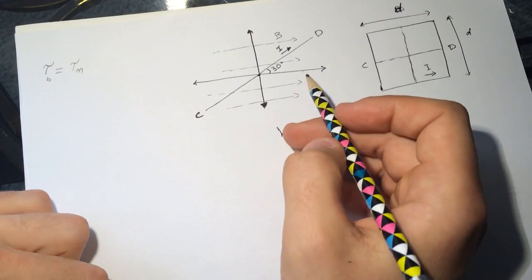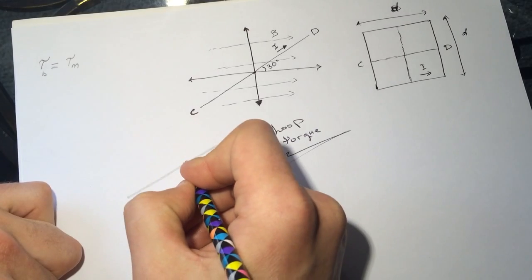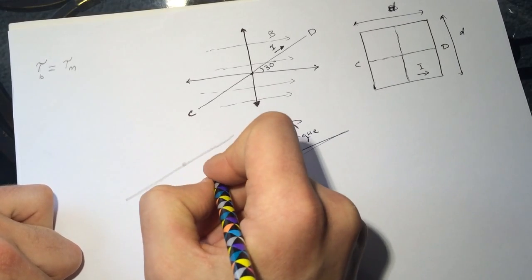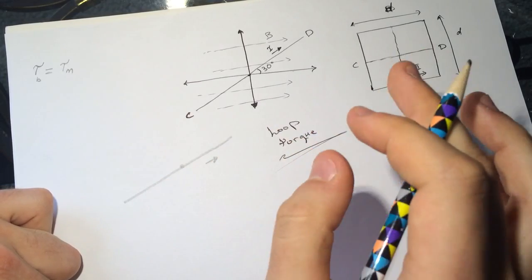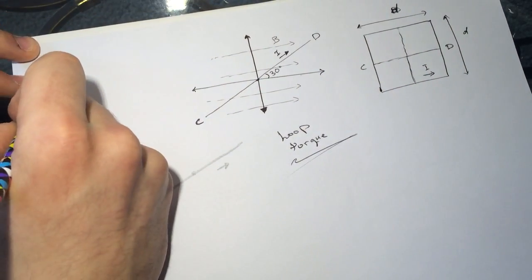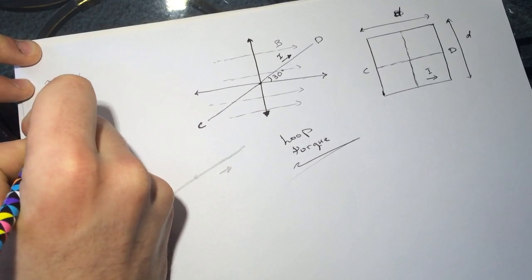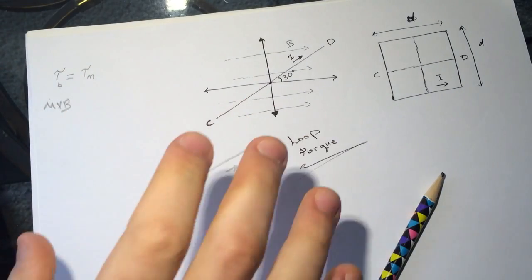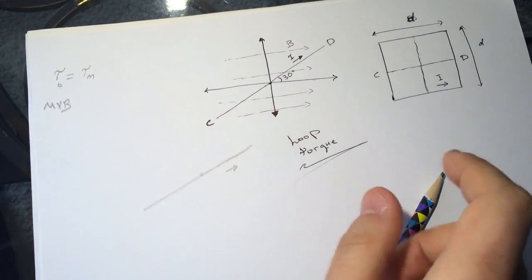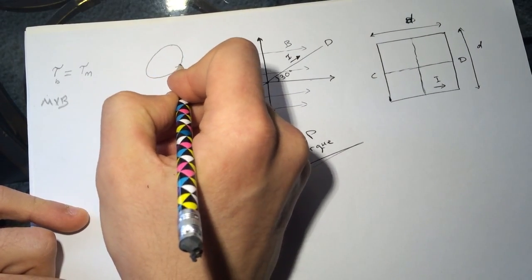So if the current is going this way, then the magnetic dipole, which creates the torque from the magnetic field, is μ cross B. The dipole moment - you cross your fingers with the current around it. Curl your fingers with the direction of the current and this will give you the direction of the dipole moment.